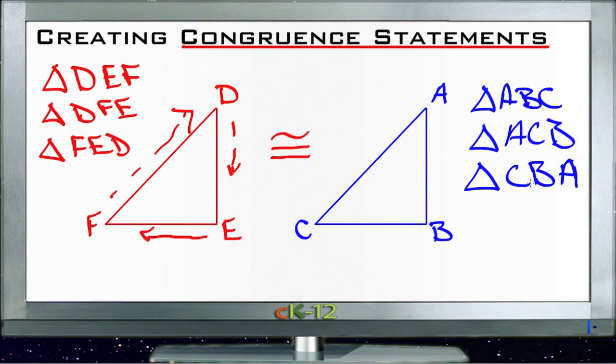When we're talking about a congruence statement, we have to make sure that we describe each of the triangles from the same point of view or in the same order. So if I say that triangle DEF is congruent to triangle ABC, I want to make sure that I'm using the same three points of reference in the same order.